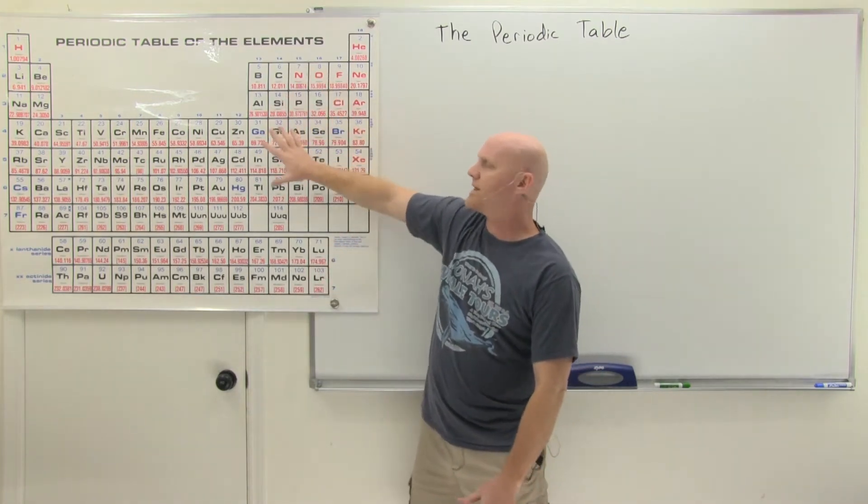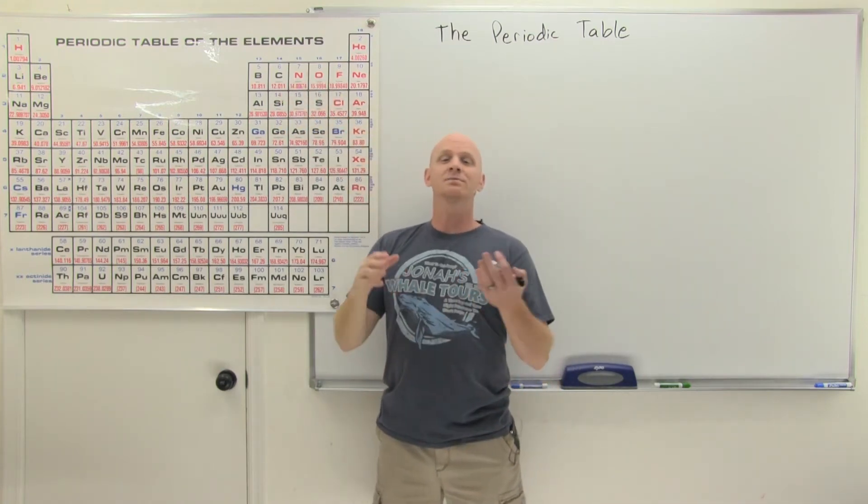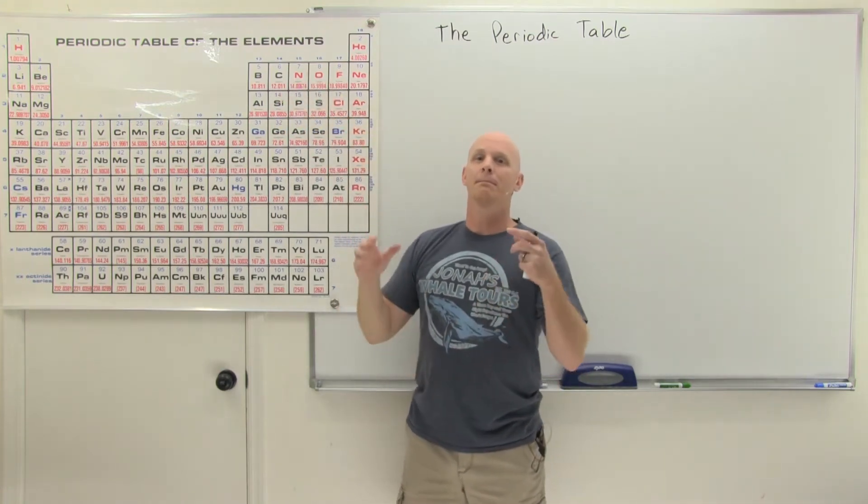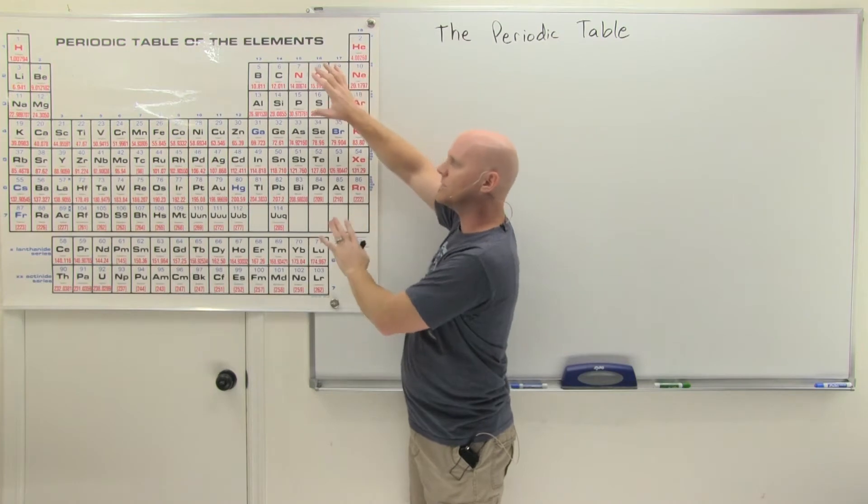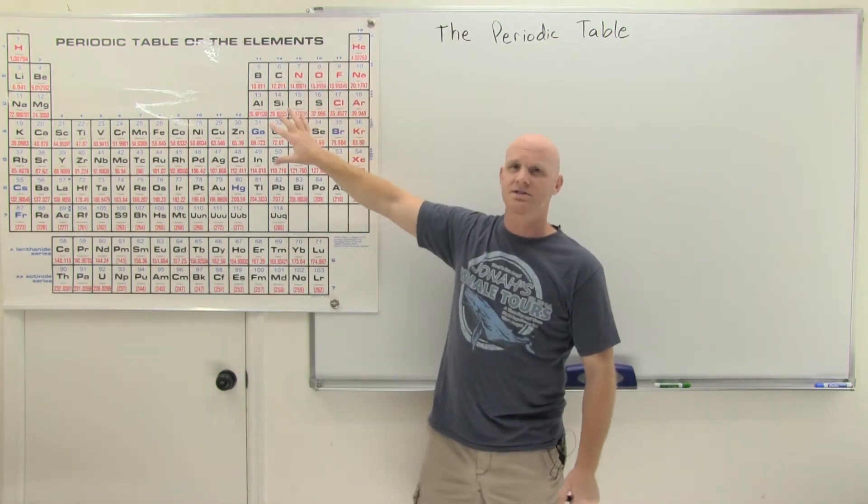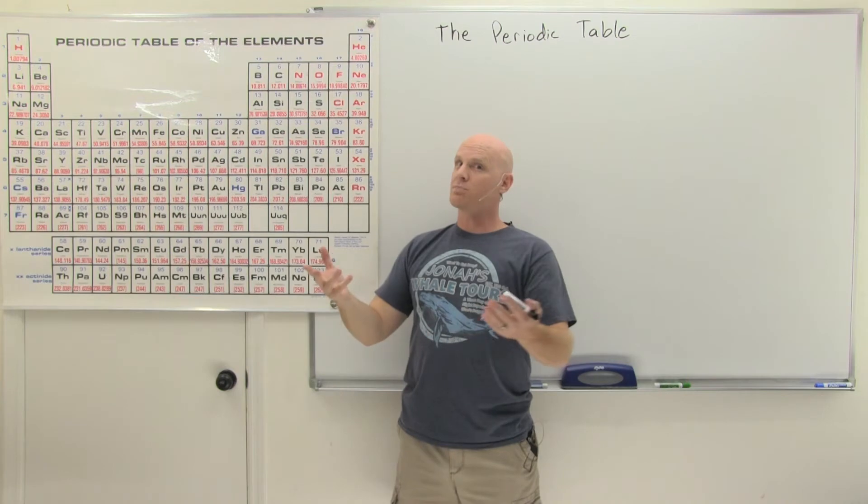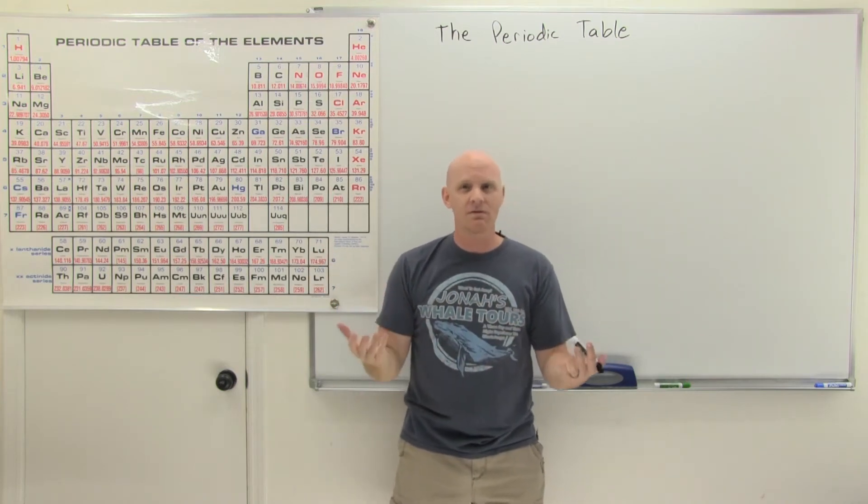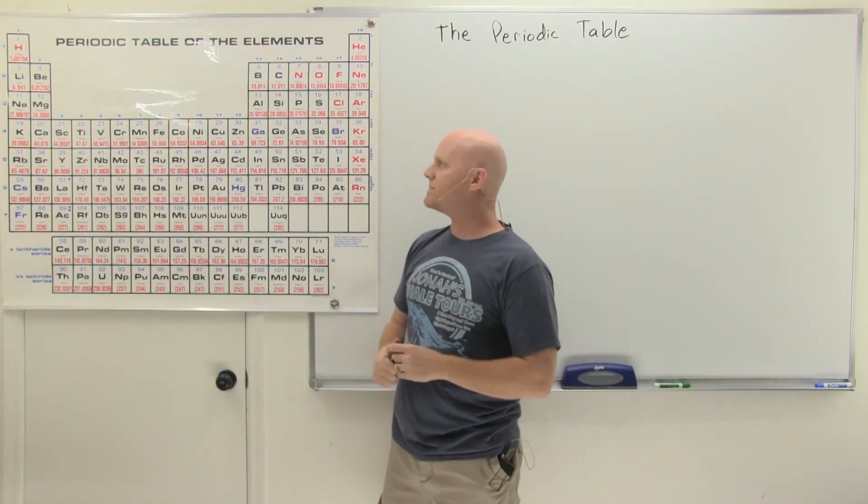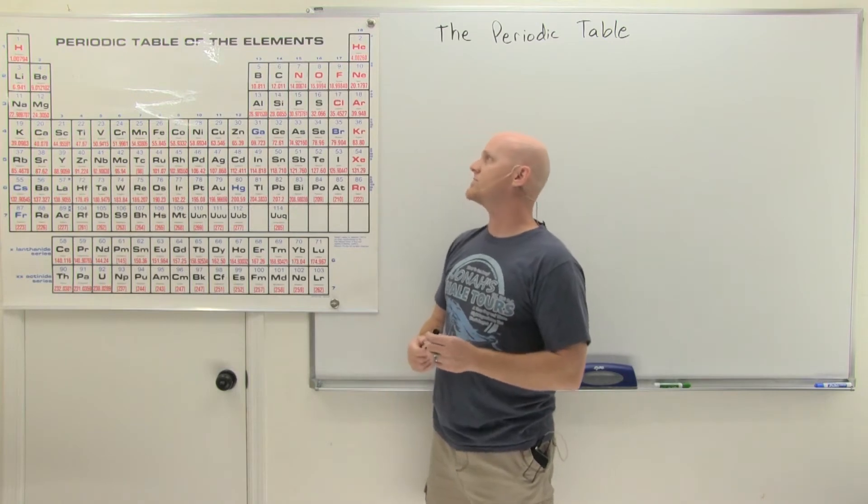But even some of the ones up here, there were elements that hadn't even been discovered in Mendeleev's time, but he set up this table in a very methodical way. There's a very good structure to this thing, and he could predict that certain elements probably existed. We just hadn't discovered them yet. So it was actually quite an amazing feat he pulled off.